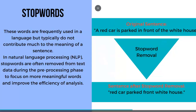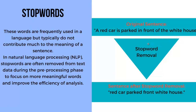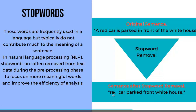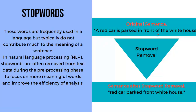Here is an example. The original sentence is: 'A red car is parked in front of the white house.' After stop word removal, the sentence looks like this: 'red car park front white house.' The words a, is, in, of, and the are the stop words removed. Let's now discuss stop words with practical examples by jumping to Google Colab.